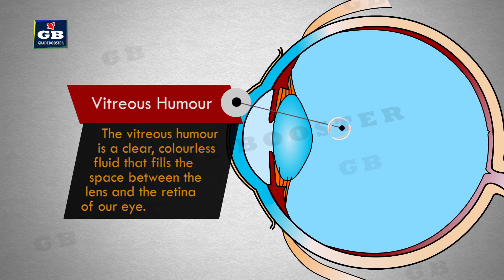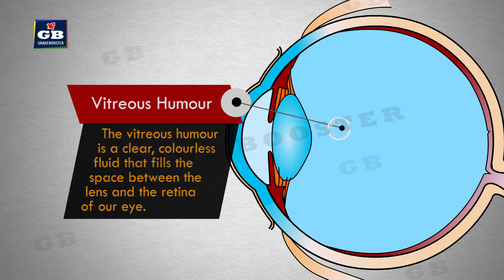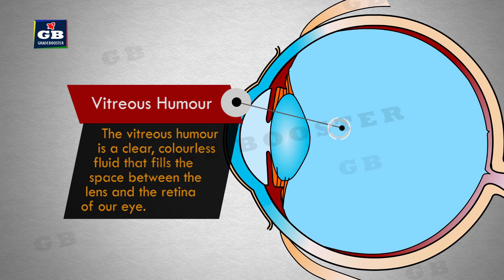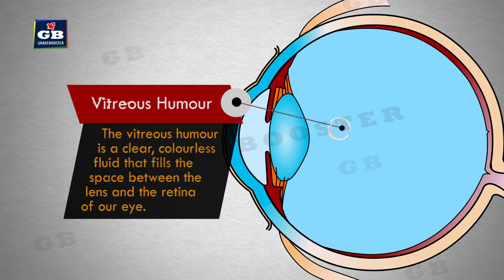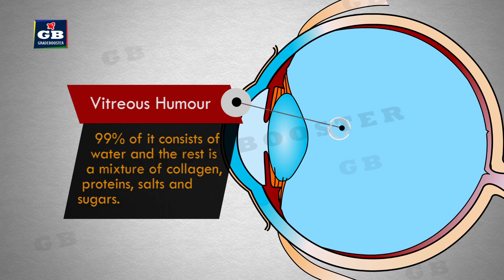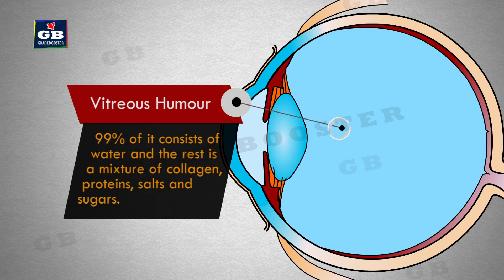This is vitreous humor. The vitreous humor is a clear, colorless fluid that fills the space between the lens and the retina of our eye. 99% of it consists of water, and the rest is a mixture of collagen, proteins, salts, and sugars.